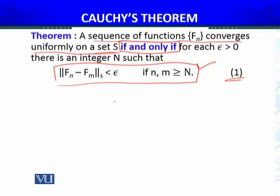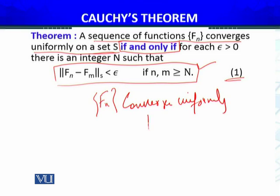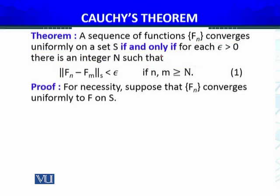First, necessary condition को हम proof करते हैं। क्या मतलब है: sequence of functions converges uniformly — f_n converges uniformly — we will show that the Cauchy condition is true। For necessity, suppose that f_n converges uniformly to f on S।